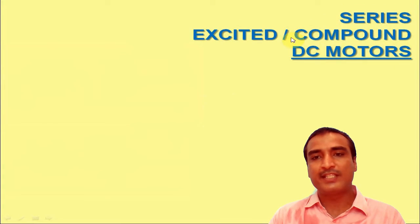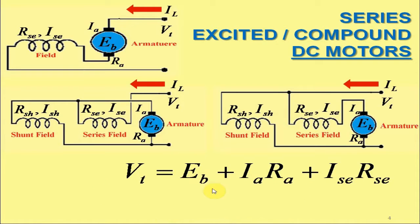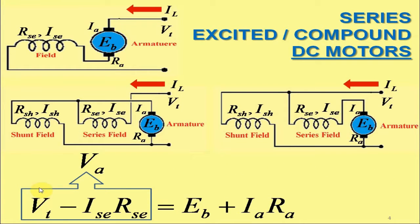Similarly, for the cases of series excited as well as short shunt and long shunt compound DC motors, the current voltage relationship is typically expressed as VT is equal to EB plus IA RA plus ISE RSE, where symbols have their usual meanings. Rearranging this equation, we have VT minus ISE RSE is equal to EB plus IA RA. Remember that we may express the terms VT minus ISE RSE as the voltage across the armature ends, that is VA.